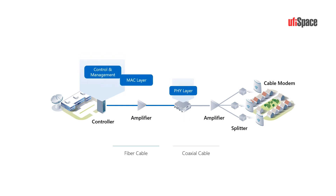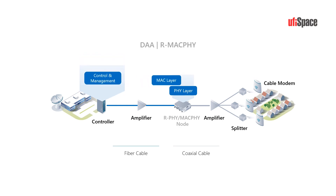Remote MAC5 architecture further moves the MAC layer to the remote node, closer to the subscriber's location. By doing so, the remote node gains more unified control and management over the network. There won't be as much space required in the central hub, which will host only generic servers and routers to manage and control the network, virtualizing the CCAP and CMTS.